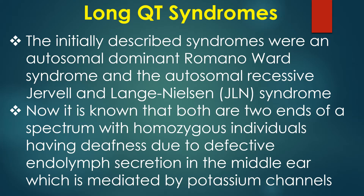Initially described syndromes were the autosomal dominant Romano-Ward syndrome and the autosomal recessive Jervell-Lange Nielsen syndrome. It is now known that both are two ends of a spectrum, with homozygous individuals having deafness due to defective endolymph secretion in the inner ear, mediated by potassium channels.